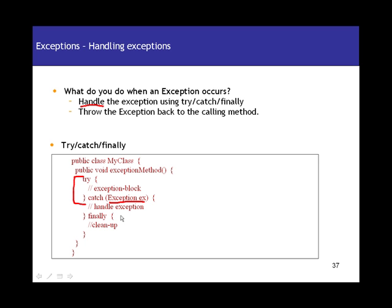In the catch block, you put code to handle the exception. For example, if you were trying to get values from a file in the try block and get a FileNotFoundException, you handle it by providing an alternative — such as giving the user a message saying the requested file is not found at that location. That's what you do in the catch block: handle the exception in some alternative way.